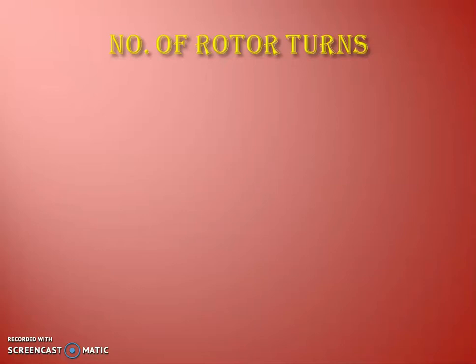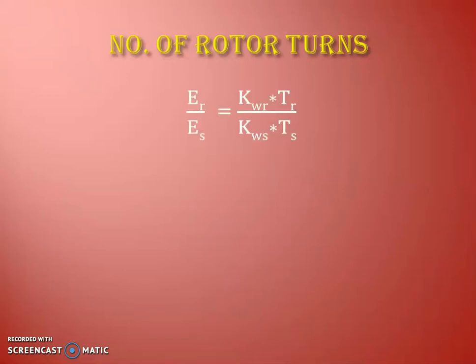Our next design step is number of rotor turns. The rotor represents the secondary of a transformer, and the voltage between slip rings is maximum when the rotor is at rest — that is the standstill condition. Therefore, to keep the rotor voltage to an acceptable level, we must effectively control the stator to rotor turns ratio, just like a transformer. The ratio of rotor voltage to stator phase voltage is purely dependent on the turns ratio of rotor to stator turns.